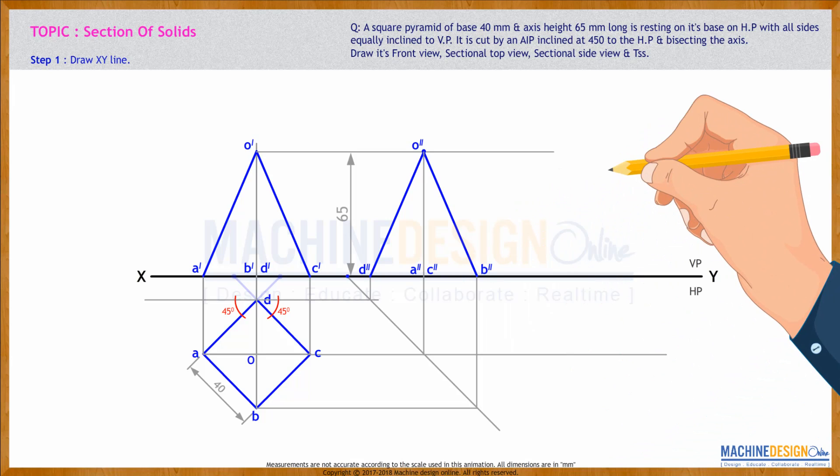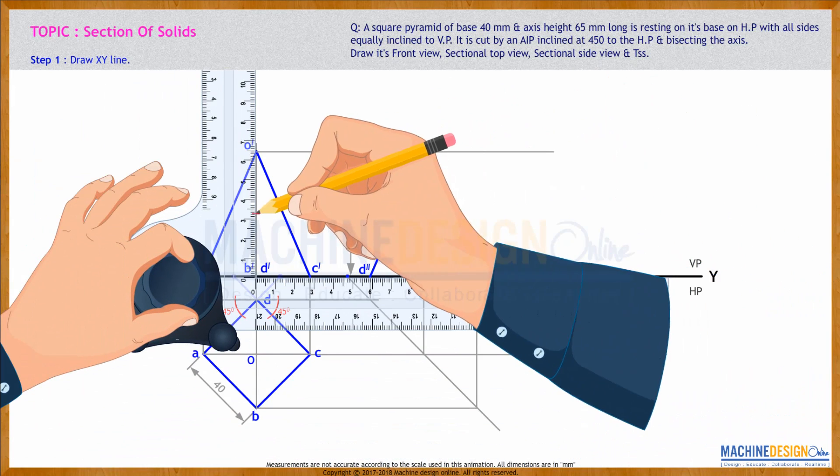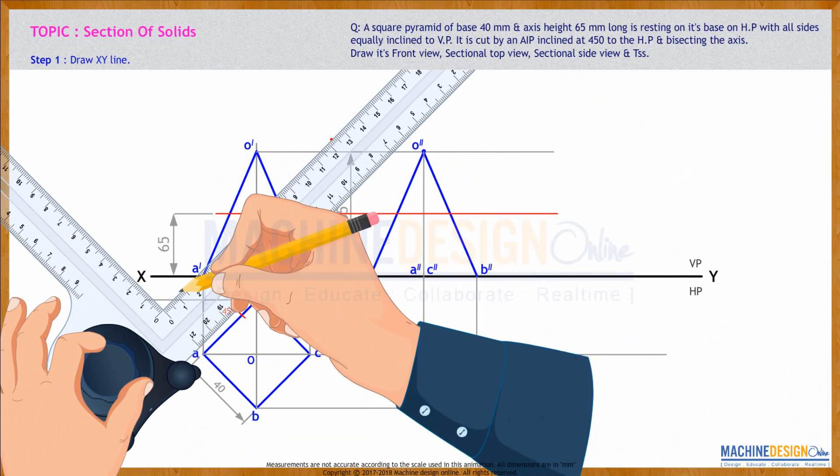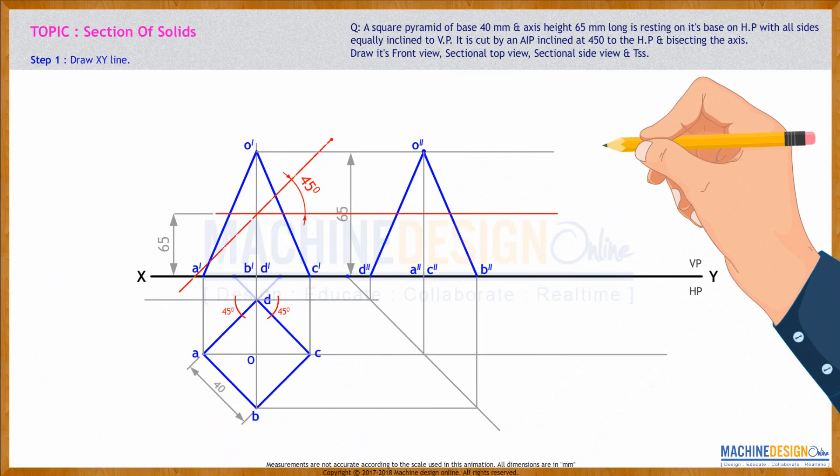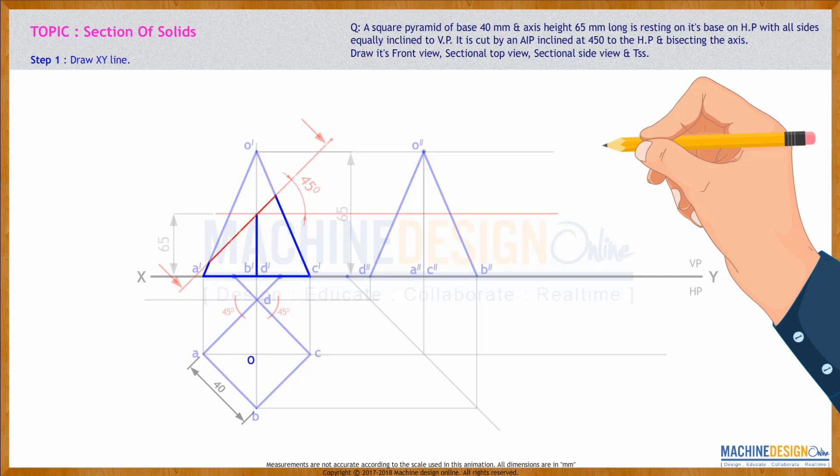Now we'll see, it is cut by an AIP which is inclined at 45 degrees to HP and it is bisecting the axis. So this height is 65, so we'll take half of this and it is cutting at what angle? 45 degrees. So we'll draw 45 degrees. This is the cutting plane.